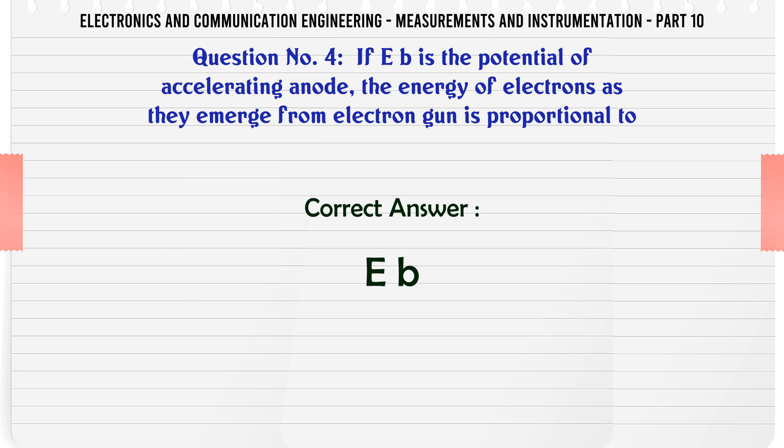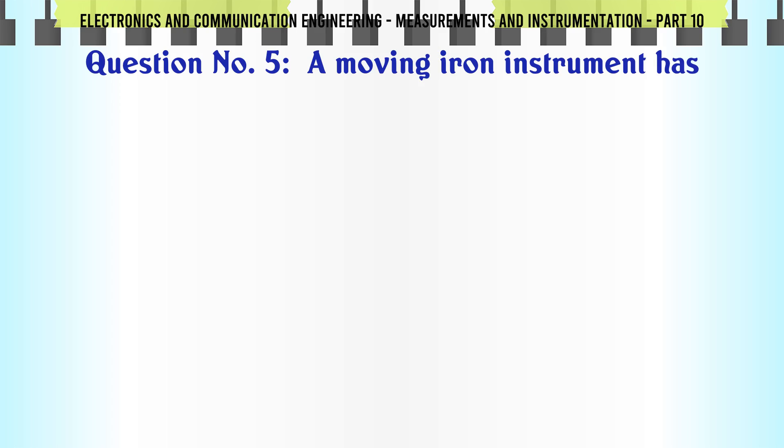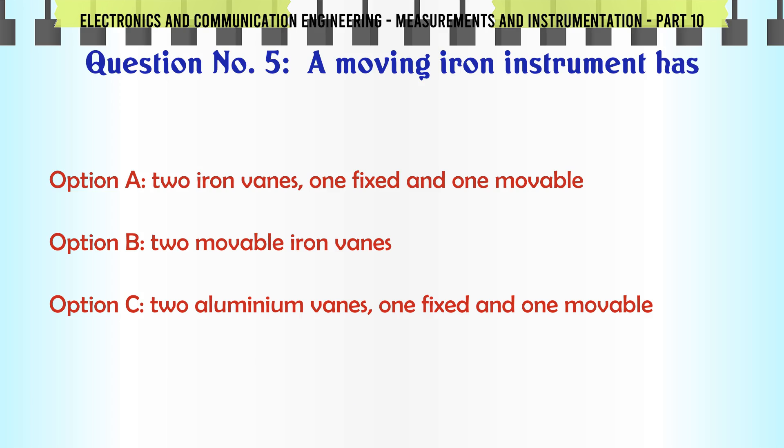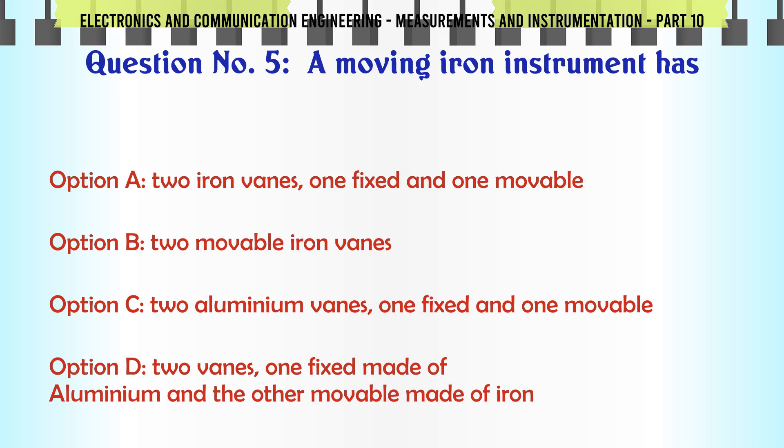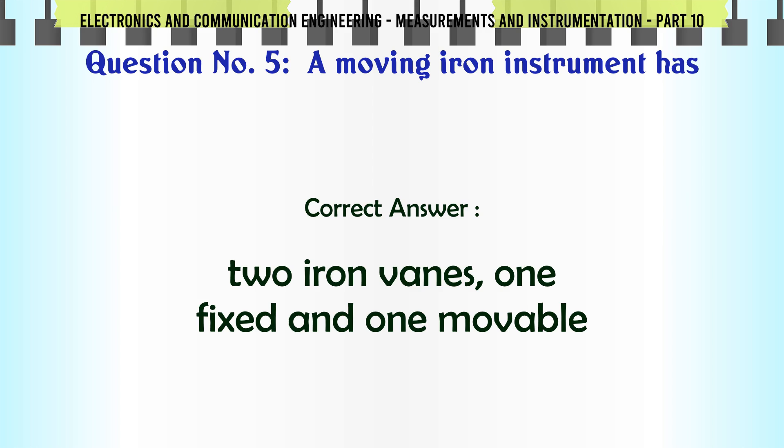A moving iron instrument has: A) 2 iron vanes, one fixed and one movable, B) 2 movable iron vanes, C) 2 aluminum vanes, one fixed and one movable, D) 2 vanes, one fixed made of aluminum and the other movable made of iron. The correct answer is 2 iron vanes, one fixed and one movable.